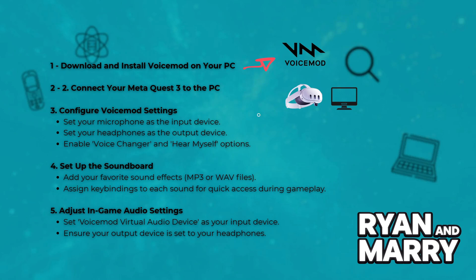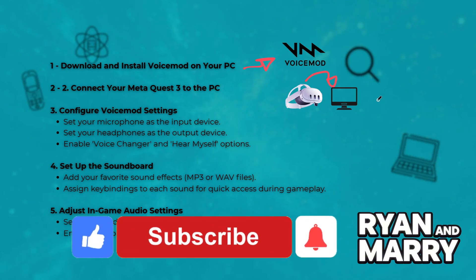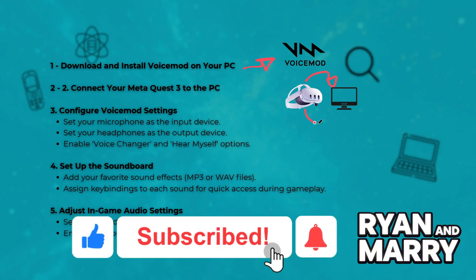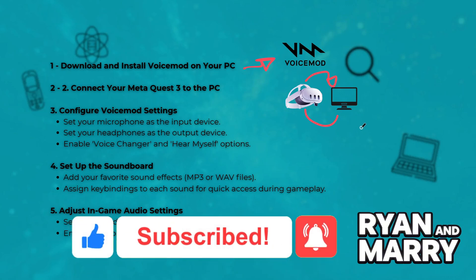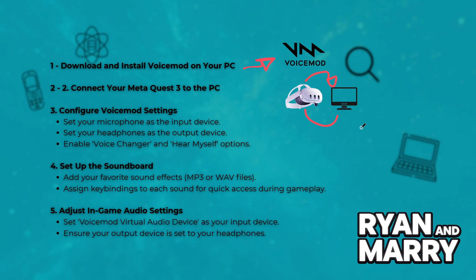Step 2: Connect your Meta Quest 3 to the PC. Using a USB-C cable or Air Link, connect your Meta Quest 3 headset to your PC. Ensure that Oculus Link is active and your PC recognizes the headset.